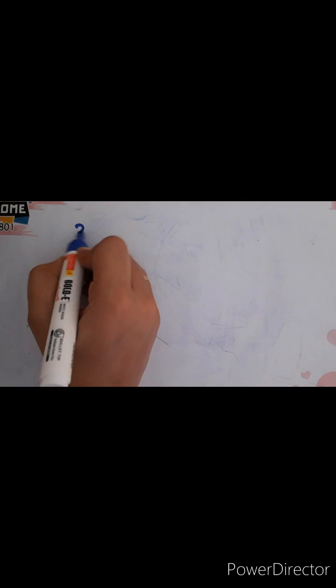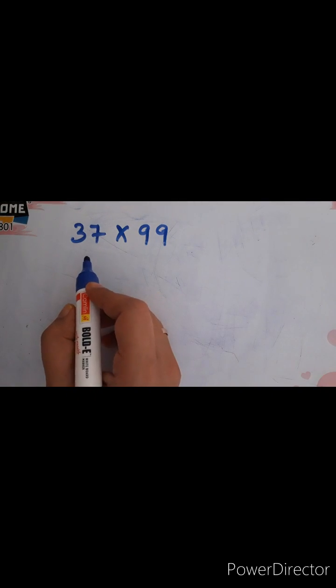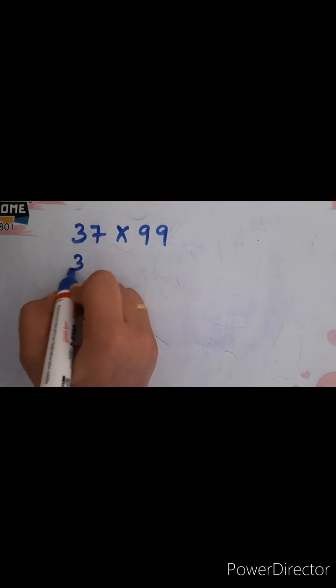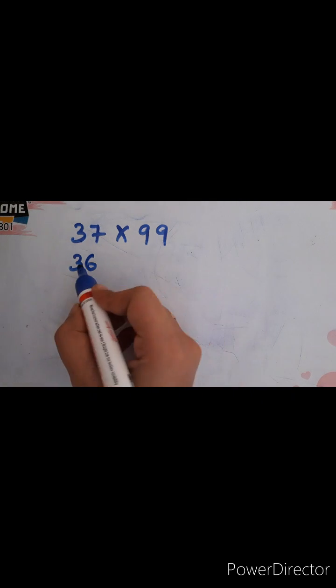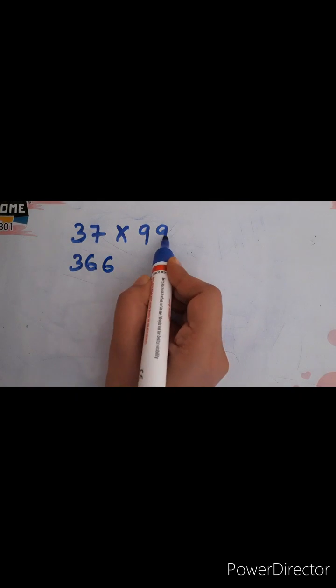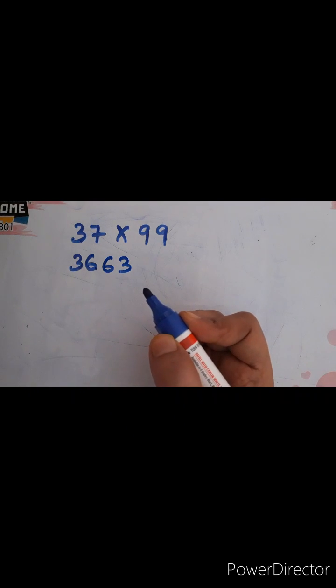Can you tell me the answer of 37 into 99? There is an easy method. The number preceding 37 is 36. Then: 3 plus what gives 9? That is 6. And 6 plus what gives 9? That is 3. So the answer is 3663.